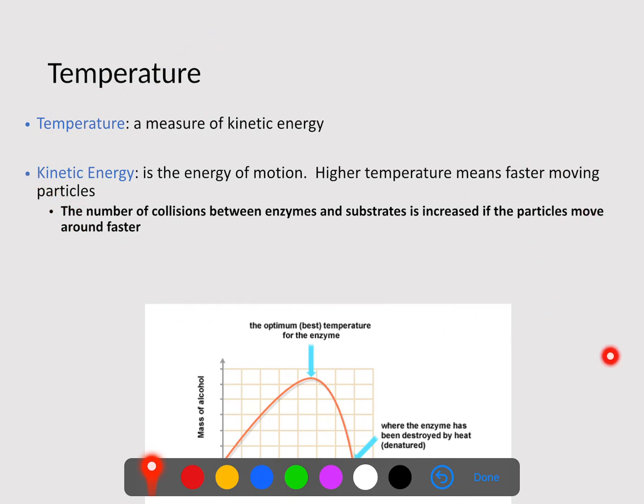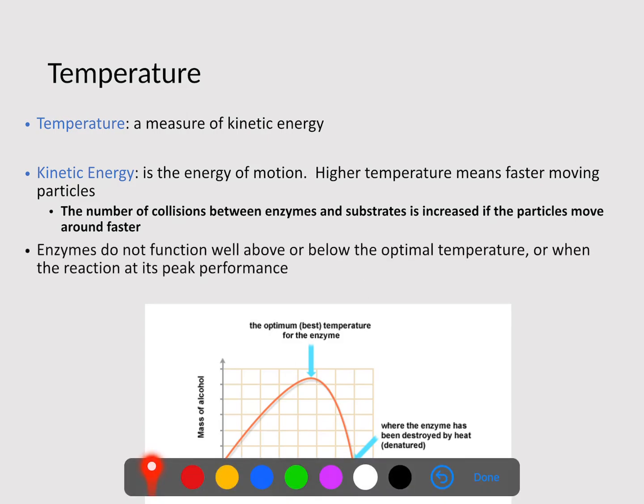If we increase faster, again, it's moving faster. Again, slow, low temperature moves slower. So the number of collisions between enzymes and substrates is increased if the particles move around faster. Enzymes do not function well above or below that optimal pH. So if this is the optimal pH or optimal temperature right here, if we start to decrease away from that, it doesn't work as well. If we start to increase away from that, the enzyme will most likely get destroyed because the proteins will begin to break down or denature.